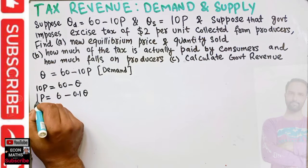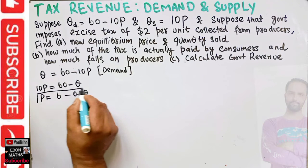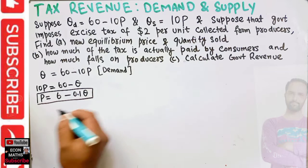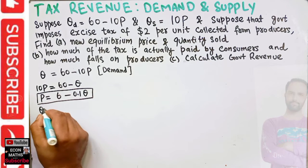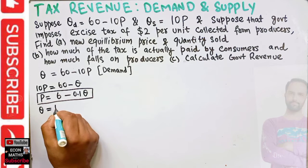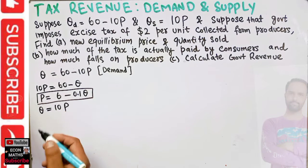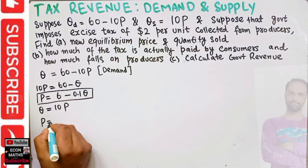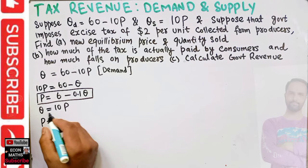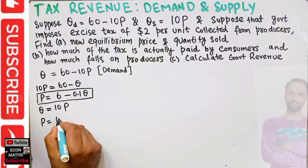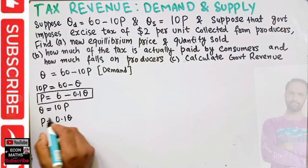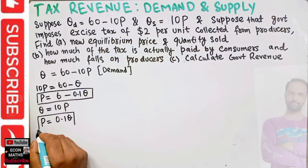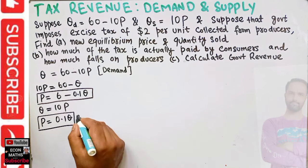Now for supply: supply is given as q equals 10p. Writing the inverse supply function and solving for p, we get p is equal to 0.1q. These are our inverse demand and supply functions.